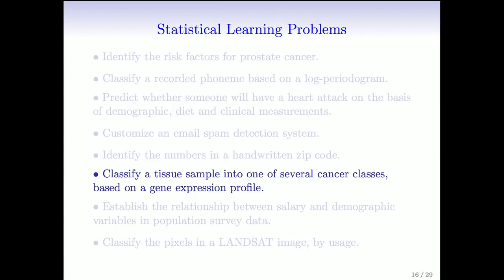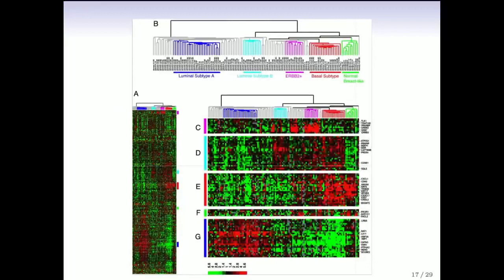The next example comes from medicine: classifying a tissue sample into one of several cancer classes based on the gene expression profile. Trevor and I both work in the medical school part-time here at Stanford. This is data in breast cancer — gene expression data collected from gene chips. On the left is a matrix of data: each row is a gene (about 8,000 genes), and each column is a patient. This is called a heat map — green meaning low gene expression and red meaning high.